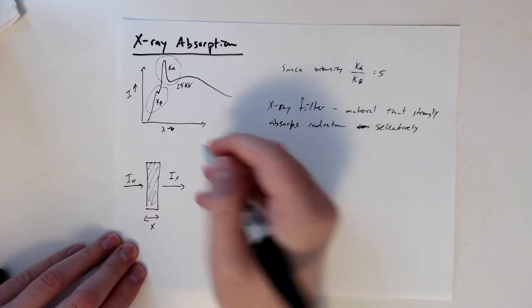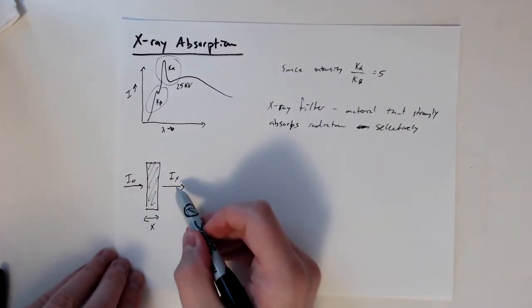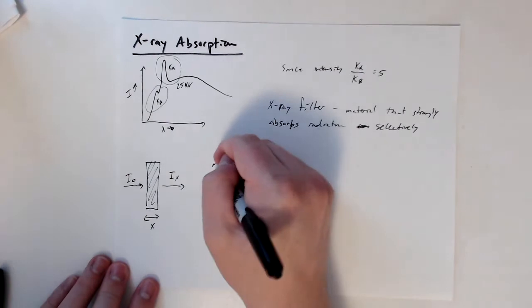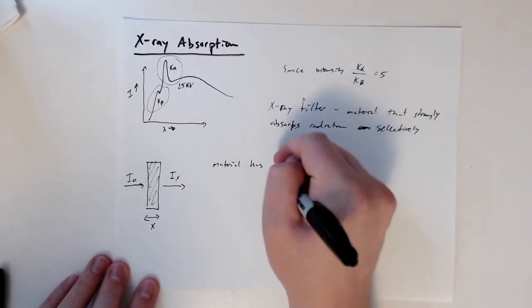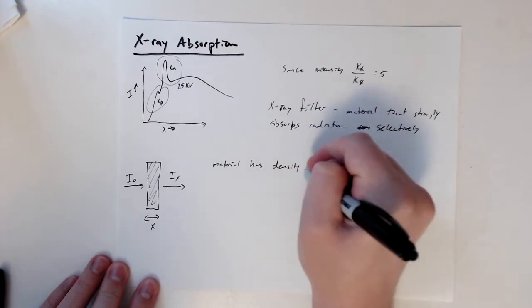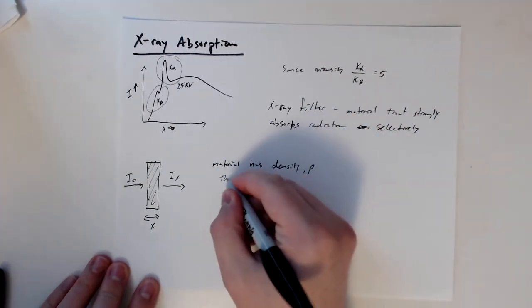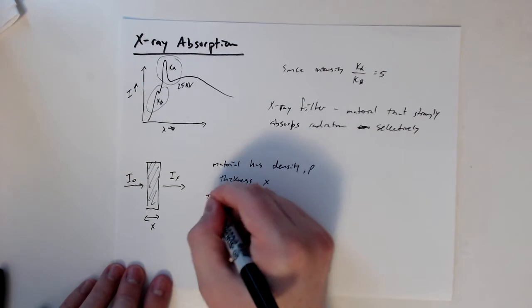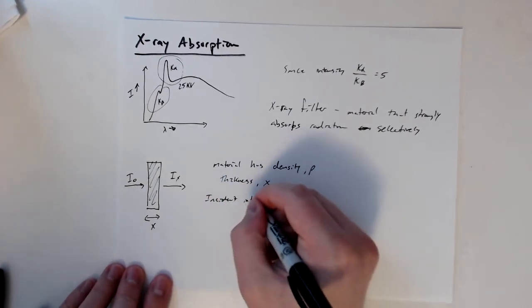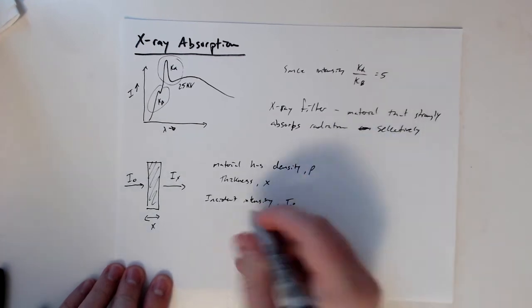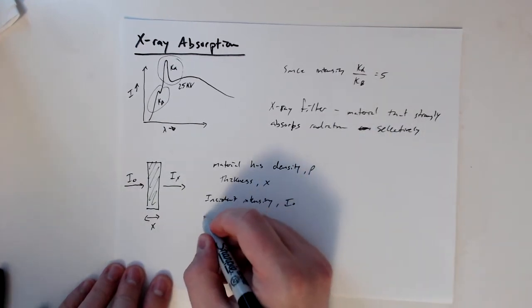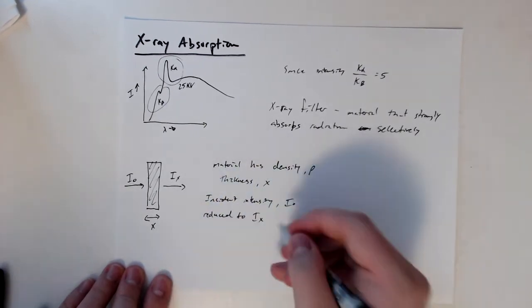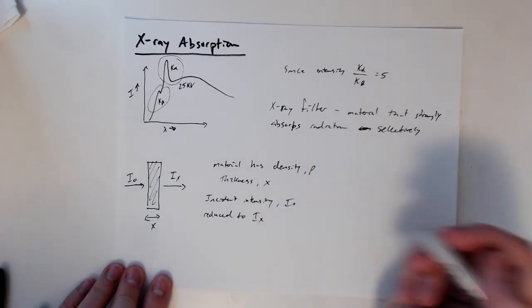Coming through the other side, some of it is absorbed and the intensity decreases to Iₓ. This material has density ρ and thickness x. Our incident intensity I₀ is reduced to Iₓ, where x refers to the thickness.